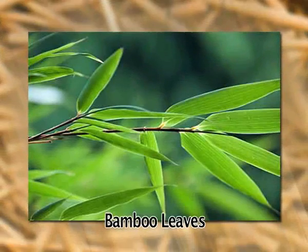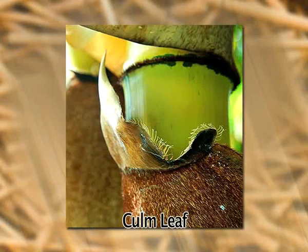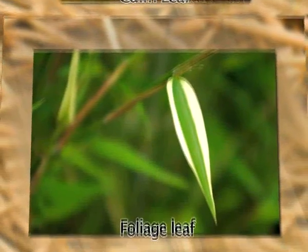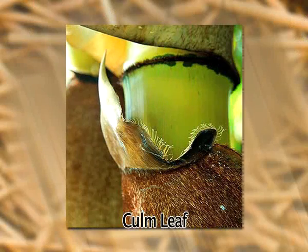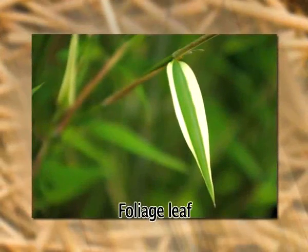The appearance of the leaf blade varies between different species. Bamboos have generally two distinct kinds of leaves: column leaves and foliage leaves. Column leaves are attached at the base of their sheath directly to the column node at the sheath scar, while foliage leaves grow from the branchlets.